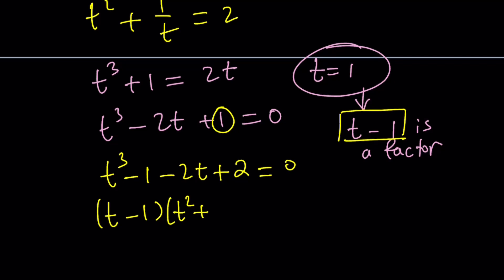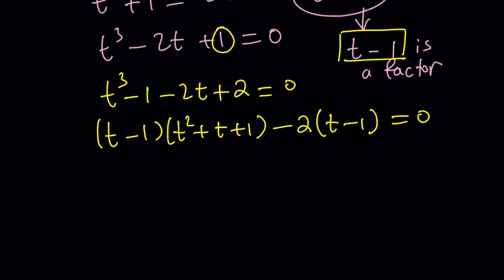Remember the difference of two cubes and the last 2 terms are also factorable and we get a common factor. Obviously t-1 is going to be a factor because we know t=1 is a solution. And this is t²+t+1 minus 2, because t-1 we took out so it's going to be 1-2 that's going to be minus 1. Awesome.